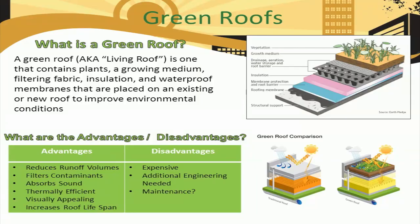A green roof is essentially a garden planted on the top of a building or urban structure. Instead of using typical roofing materials, green roofs are composed of a series of layers, including a vegetation and soil layer and synthetic plastic liners underneath the vegetation for drainage, filtration, and insulation purposes. These roofs enhance environmental conditions in urban environments by reducing runoff volumes from rain events, helping to filter contaminants in rainwater, providing insulation from noise, absorbing excess heat, and increasing the lifespan of roof structures.